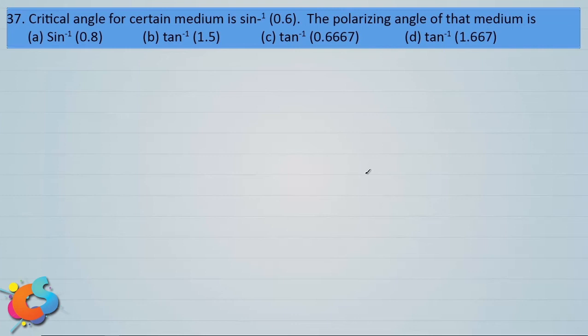The critical angle for a certain medium is sine inverse of 0.6. The polarizing angle of that medium is: a) sine inverse of 0.8, b) tan inverse of 1.5, c) tan inverse of 0.6667, and d) tan inverse of 1.667.